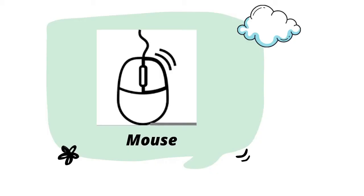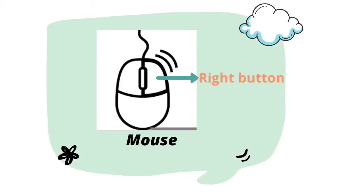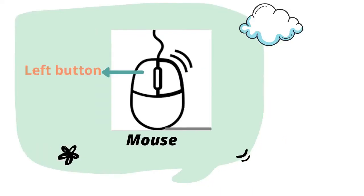It has three main parts. The first one is the wheel, the second one is the right button, and the third one is the left button.